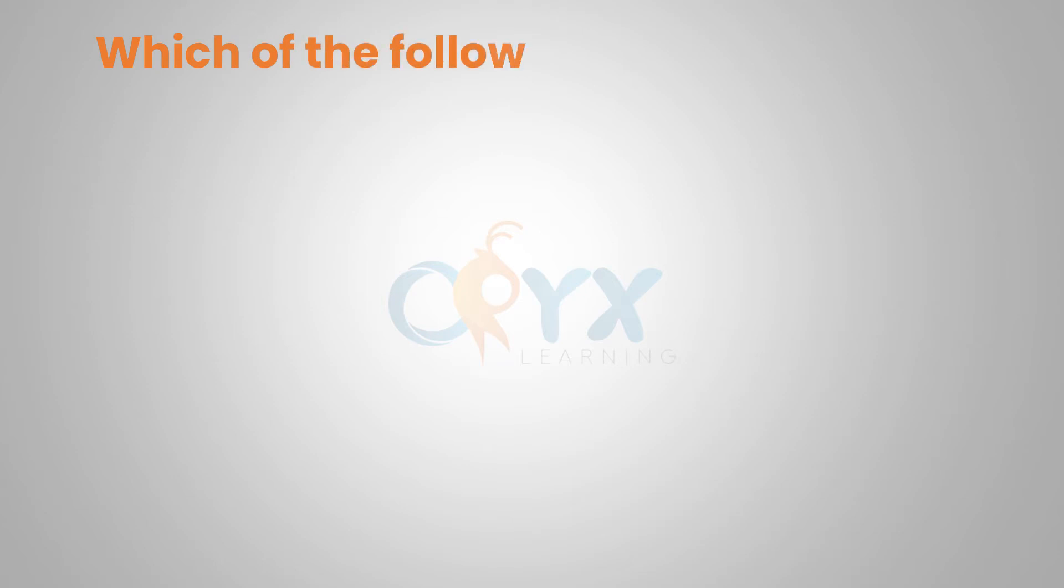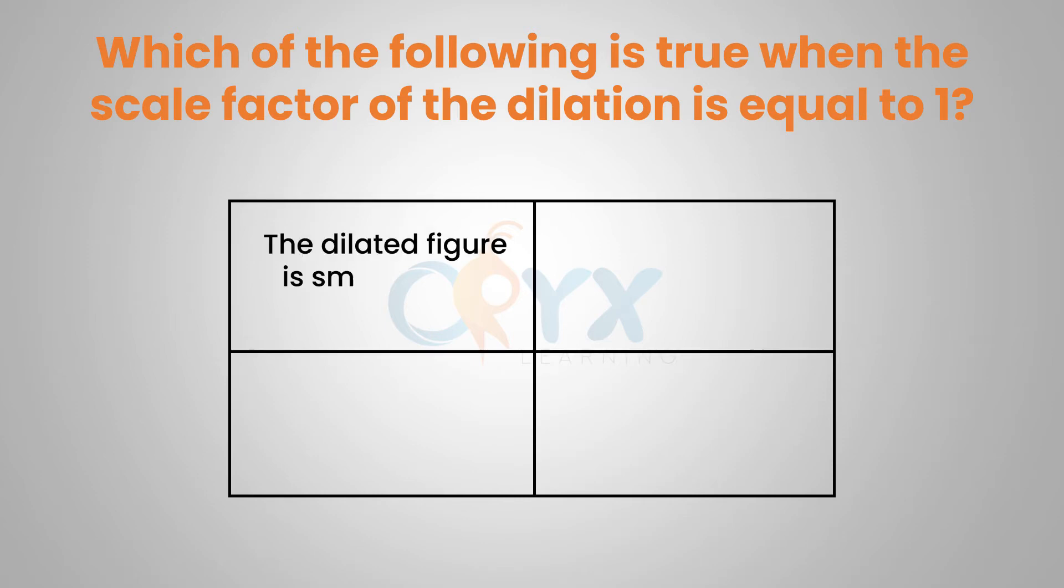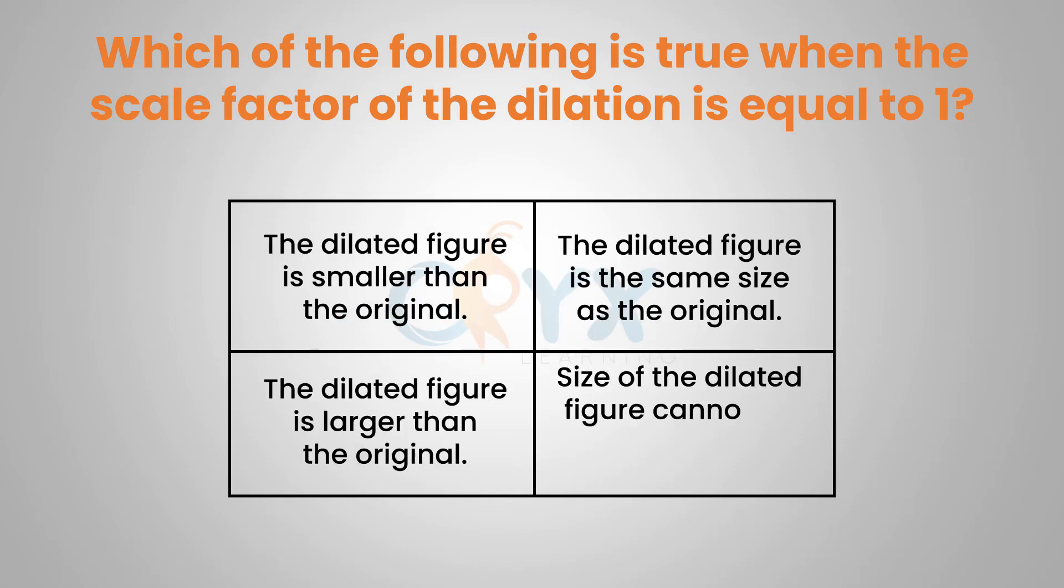Which of the following is true when the scale factor of the dilation is equal to 1? When the scale factor of the dilation is equal to 1, we are essentially multiplying by 1, which does not change the size of the figure. So the dilated figure is the same size as the original.